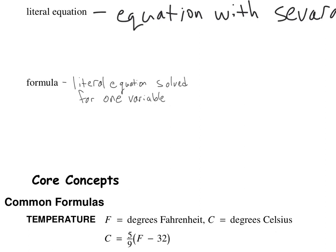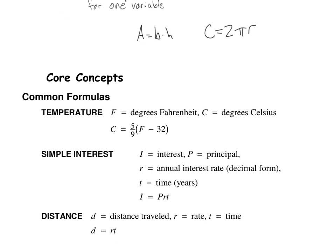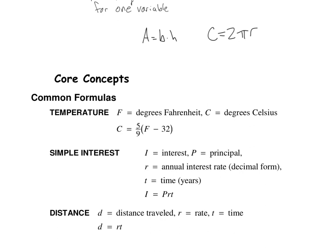So we've got this formula that's a literal equation that's solved for one variable, something like area equals base times height. There's a formula for the area of a parallelogram, or we have circumference equals 2πr. There's a formula all ready to go, solved for one particular variable. What we want to do is take literal equations and formulas and solve them for different variables.